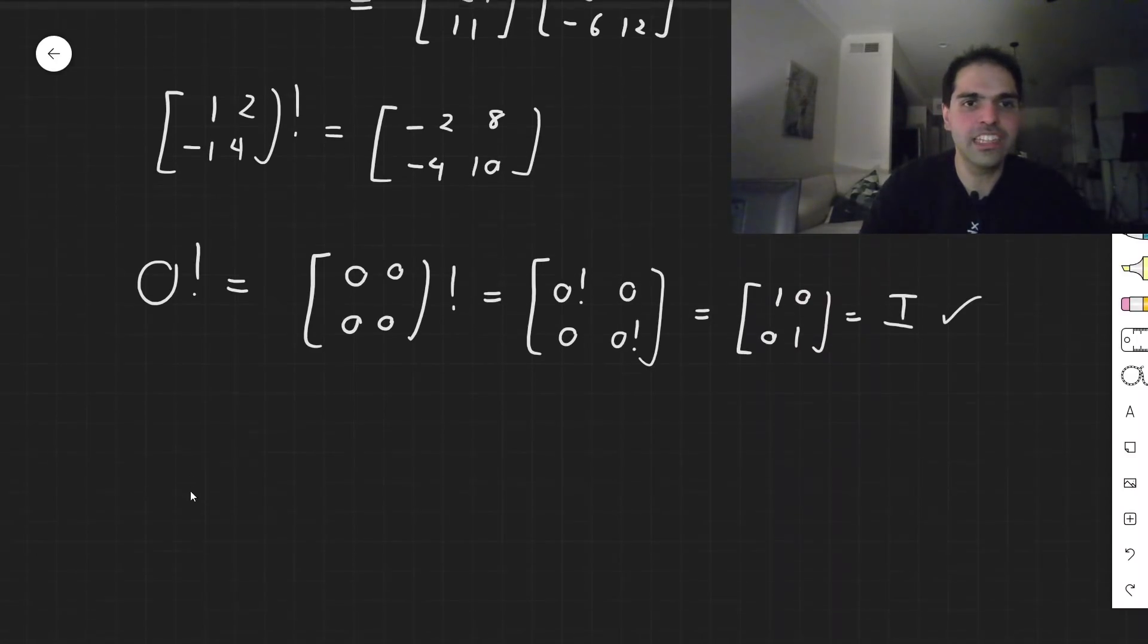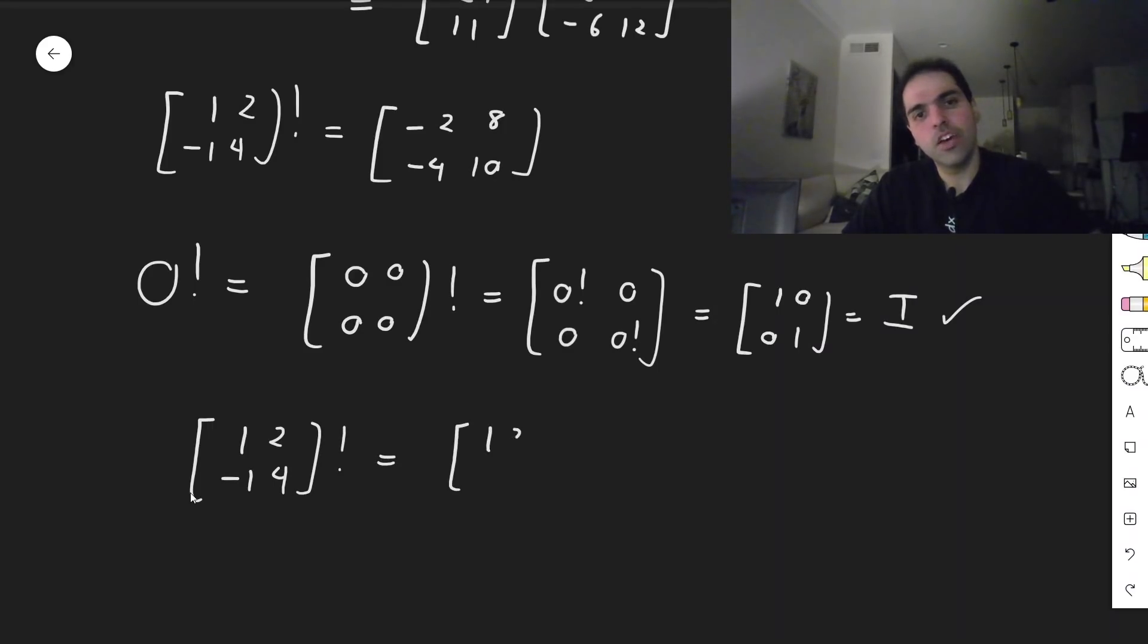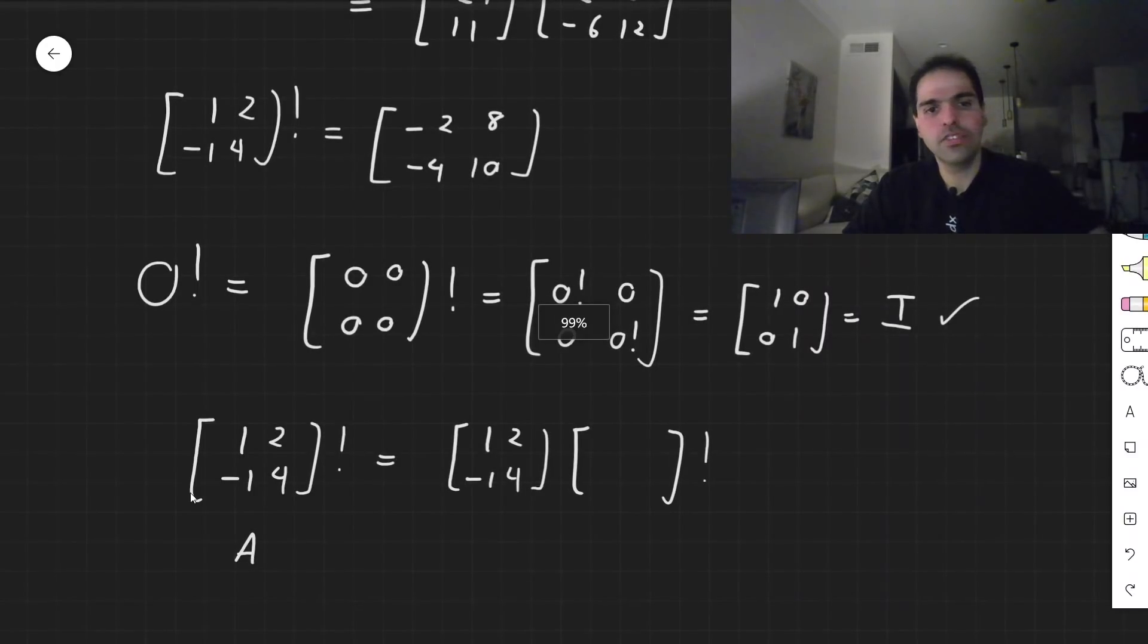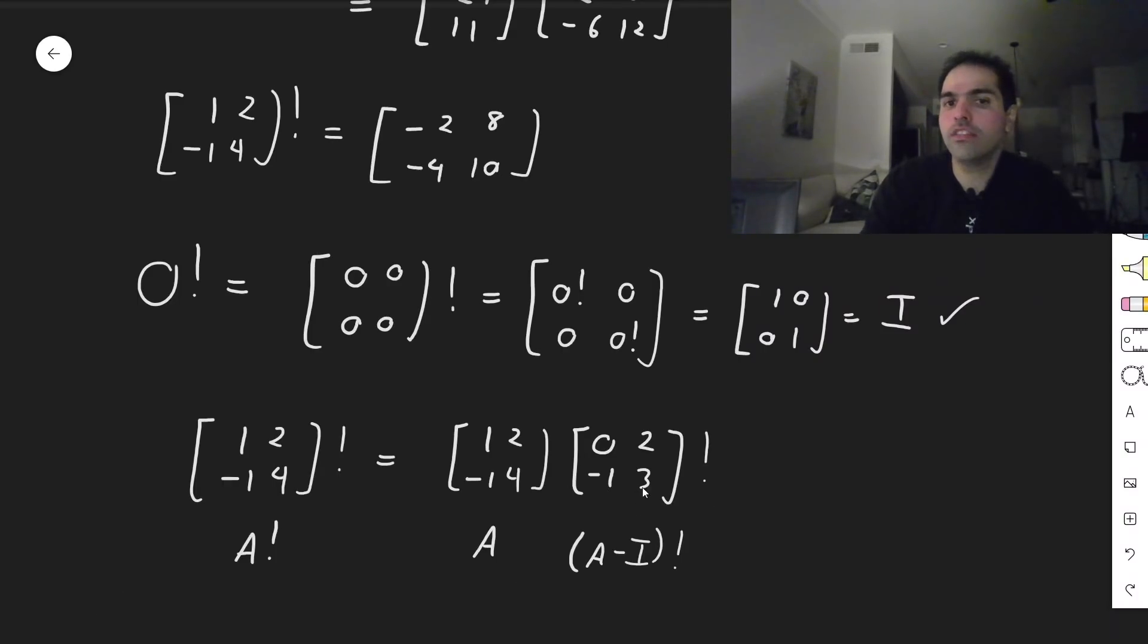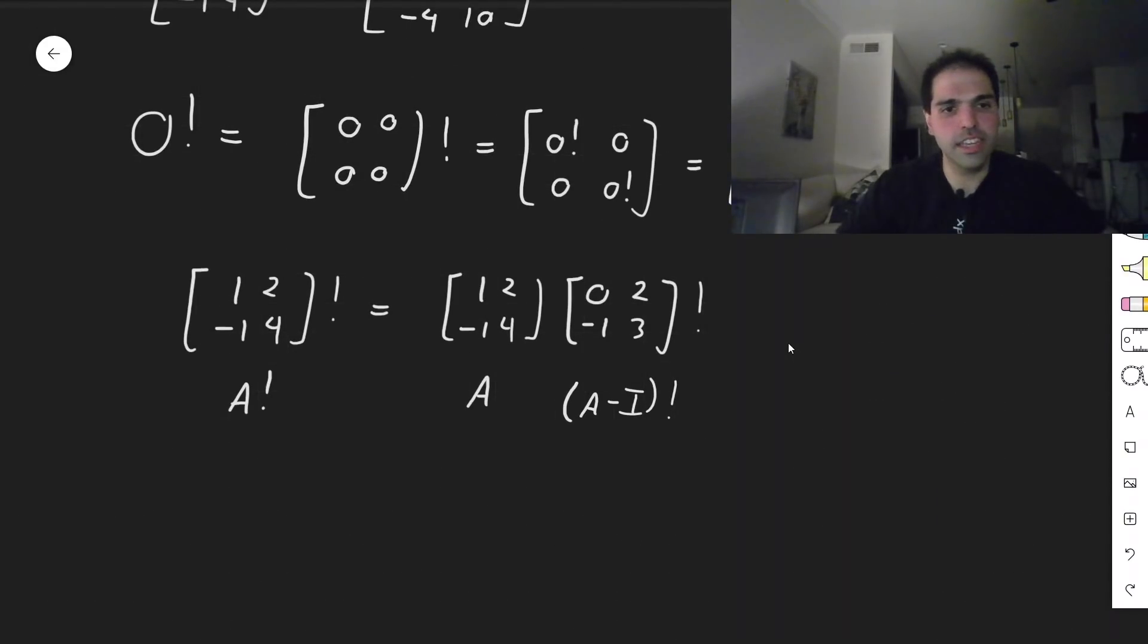So this thing is satisfied, but more importantly, do we have that [1, 2; -1, 4] factorial is that the same as [1, 2; -1, 4] times [1, 2; -1, 4] minus the identity? So do we have that A factorial equals A times (A - I) factorial? Well, for A - I, you just subtract 1 from the main diagonal, so [0, 2; -1, 3]. And now we just need to calculate the factorial of this. But here's a nice thing.